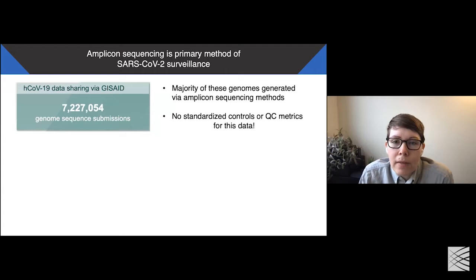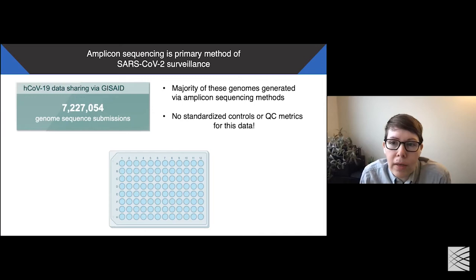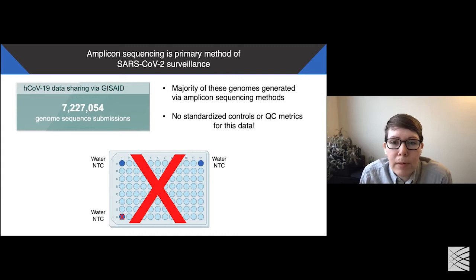As of today, there have been over 7 million SARS-CoV-2 genome sequence submissions. The majority of these genomes were generated with amplicon sequencing methods. Surprisingly, there are no standardized controls or QC metrics for this data. One commonly used control is the use of a water non-template control. Waters are added into certain locations on a sample plate, and if during sequencing it is found that a water has SARS-CoV-2 genetic material in it, then the entire plate is discarded and prepared again. This approach wastes time and resources to prepare samples again, but it does control for lab-wide contamination. This approach, however, can miss contamination events and sample swaps that occur farther away from the non-template controls, leading to erroneous genomes possibly being reported.